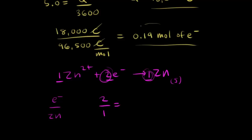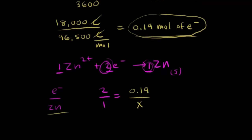On the right side of our proportion, we know that 0.19 moles of electrons were forced through our cell. So we can write down 0.19 moles of electrons. And that would be over x. And x represents the moles of solid zinc.